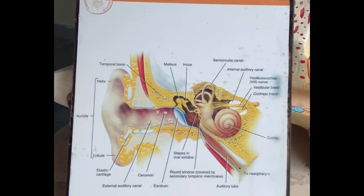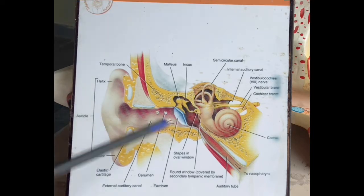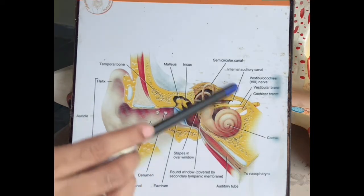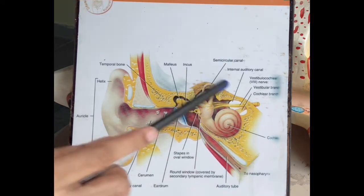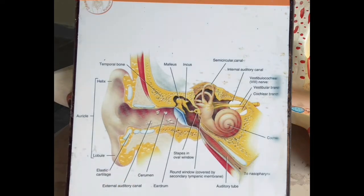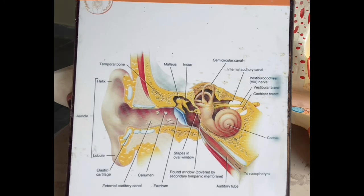This is the ear. The ear is divided into three parts: external ear, middle ear, and internal ear. The external ear and middle ear are exclusively related with hearing. In the internal ear, the cochlea is related with hearing, and the vestibule is the part of the ear which provides information to the brain regarding the position and movement of the head.